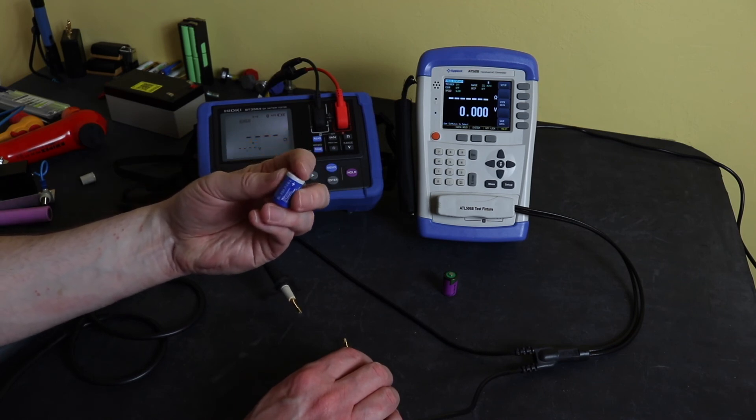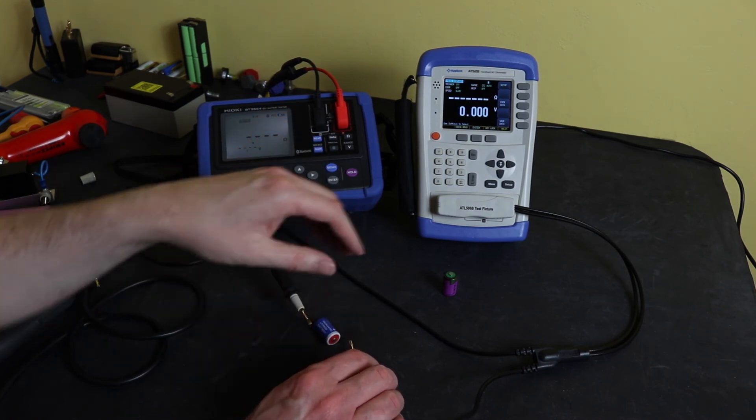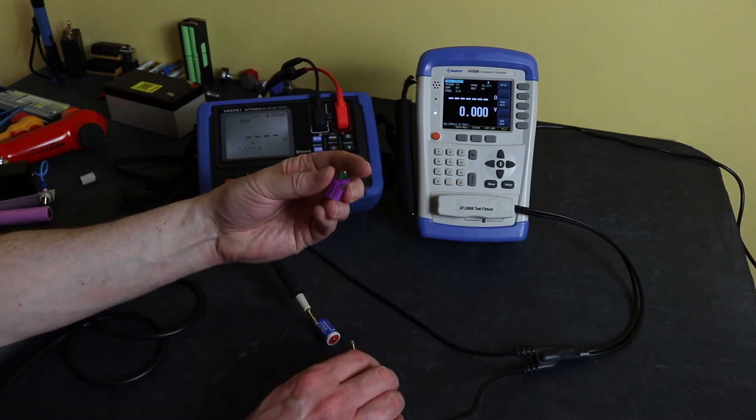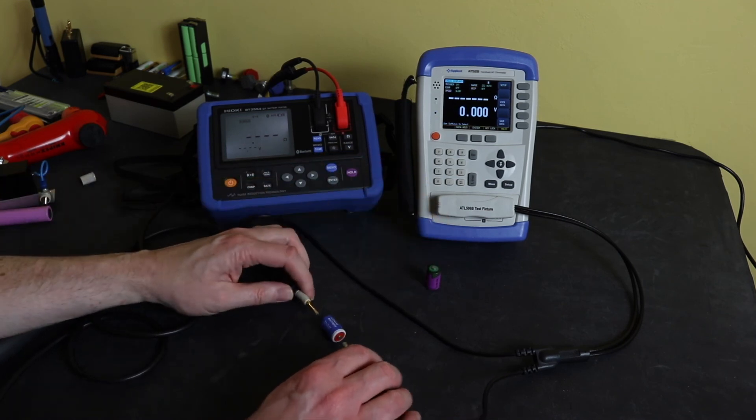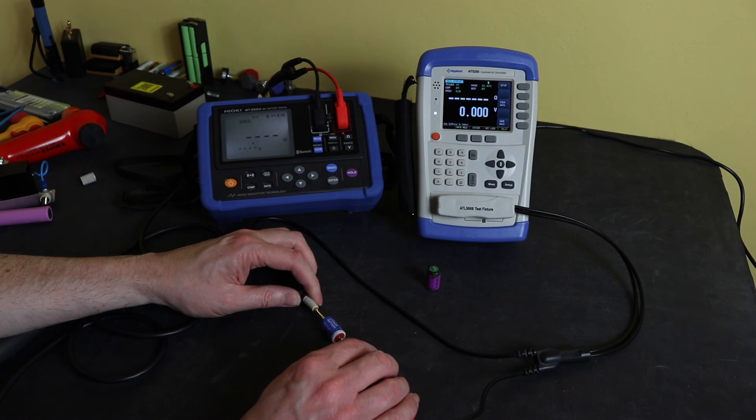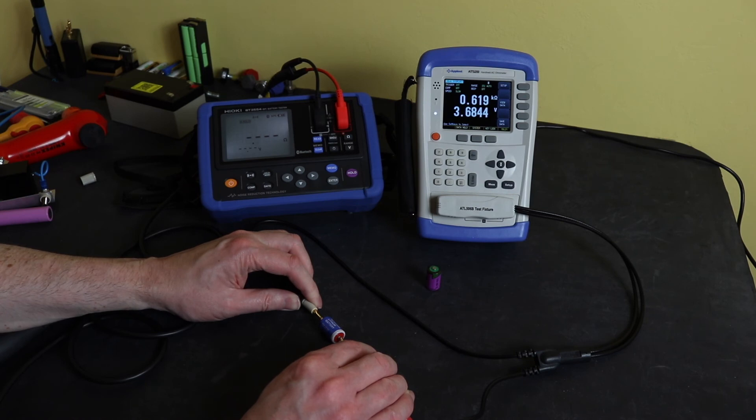This one is worn - in fact I can tell you it's 16 years old. If you measure it with this you can see it's 600 ohms, but still 3.68 volts. So the voltage coming out is fine but obviously its capacity is really really dropped off.